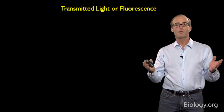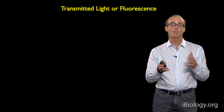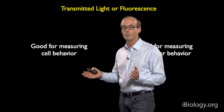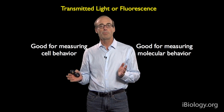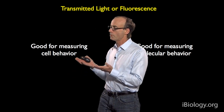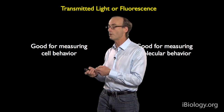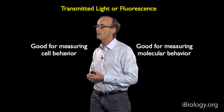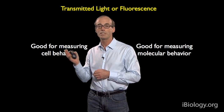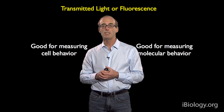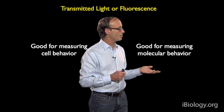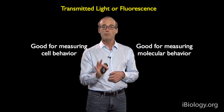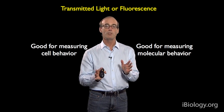The first decision tree to think about is whether you want to use transmitted light or fluorescence. Transmitted light can be a very good technique for measuring cell behavior — it's very non-perturbing, can be done with long-term time-lapse imaging, and is a very simple, uncomplicated technique. On the other hand, if you want to measure a specific molecule or organelle in the cell, you need a molecular marker, and for that you have to go to fluorescence.